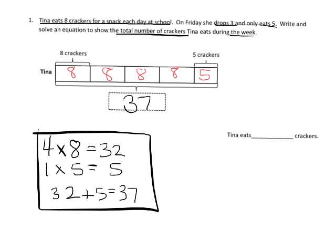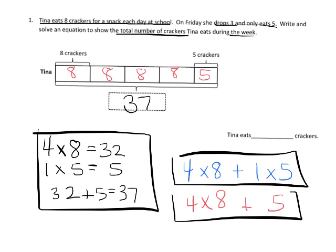Another way they could have done it is they could write it all as a single sentence: four times eight plus one times five. That's one way to do it. Another way they could have done it is said four times eight plus five. Any one of these three equations would be perfectly fine. This is like a series, and then this is a little bit more official and concise. In either case, we know that there are 37 crackers that Tina eats.